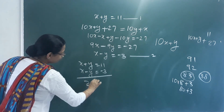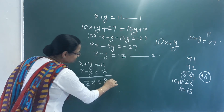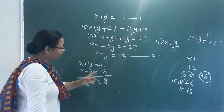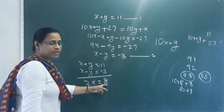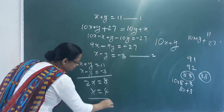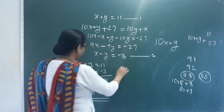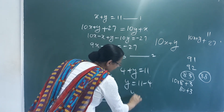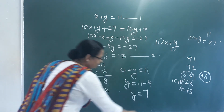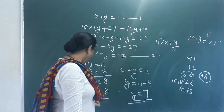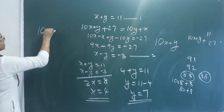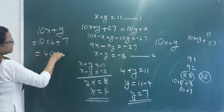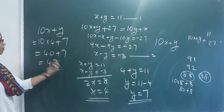Adding the two equations: y terms cancel, 2x equals 8, so x equals 4. Substituting: 4 plus y equals 11, so y equals 7. The 2-digit number is 10x plus y equals 10 times 4 plus 7 equals 40 plus 7 equals 47. The reversed number is 74.